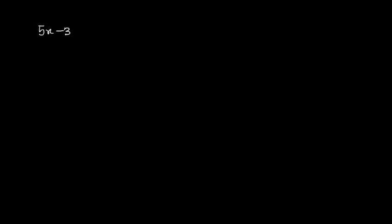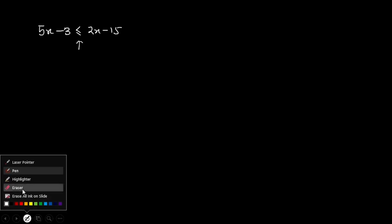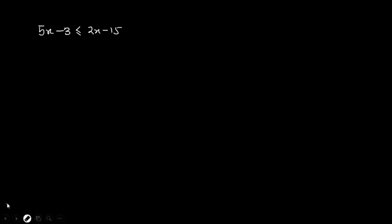Let's have a look at a typical example of a linear inequality. We have 5x minus 3 is less than or equal to 2x minus 15. This is a typical linear inequality because of the inequality sign. Solving a linear inequality is just the same as solving linear equations, but there is a catch: whenever you multiply or divide through a linear inequality by a negative number, the sign of the inequality has to change.